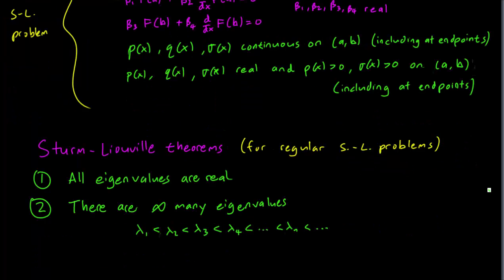Our second Sturm-Liouville theorem is that there are infinitely many eigenvalues lambda 1, lambda 2, lambda 3, lambda 4 and these go on forever up to infinity. This is a property that we observed in our previous boundary value problem calculations. In fact there is always a smallest eigenvalue lambda 1 but never a largest eigenvalue since they go on to infinity.